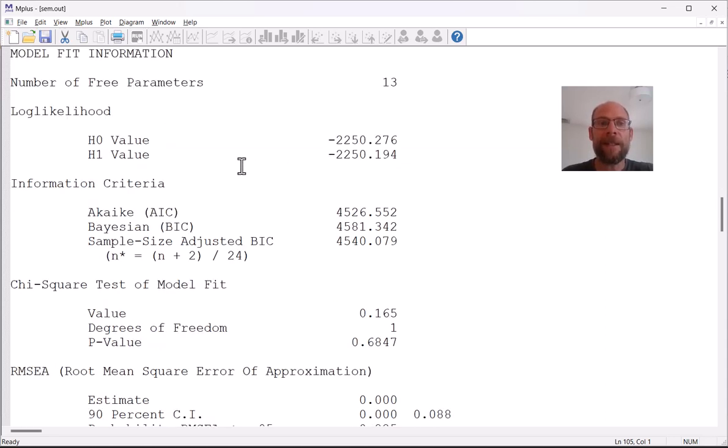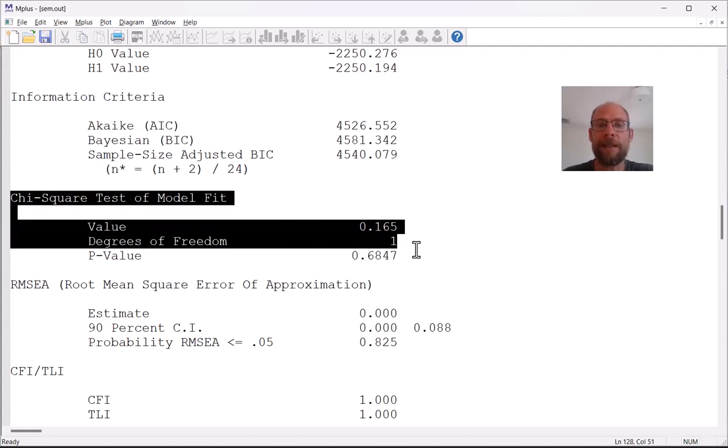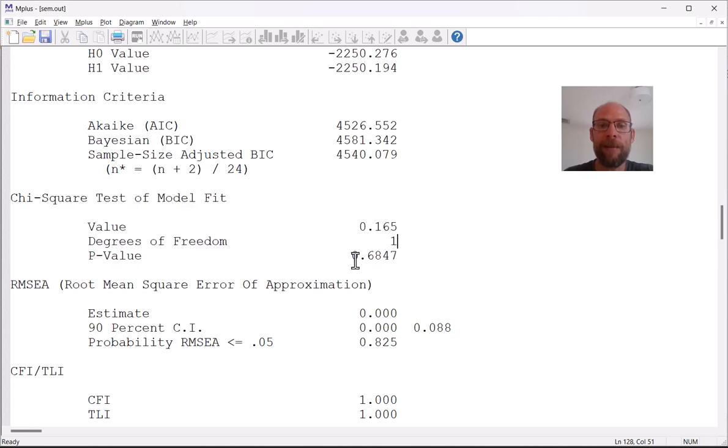After that is a summary of the model fit with the number of parameters, the log likelihood value, information criteria for model comparisons, and a chi-square test of model fit which here indicates that this model is not rejected. You can see the chi-square value is pretty small 0.165, one degree of freedom, and the p-value is 0.6847. So this means the null hypothesis that the model is an exact fit in the population is not rejected at an alpha level of 0.05 because this p-value is larger than 0.05 and so the model does not have to be rejected. It fits the data well.